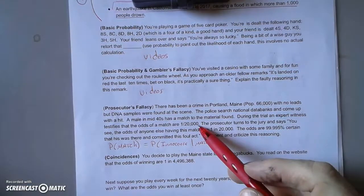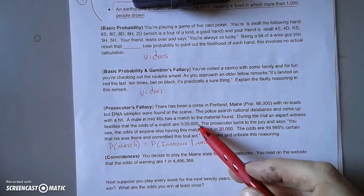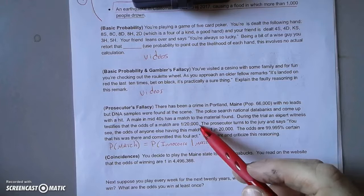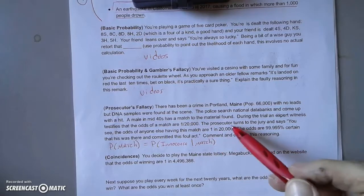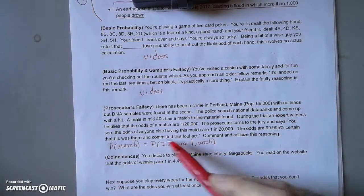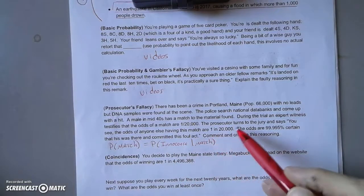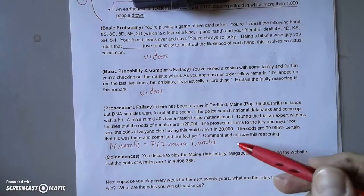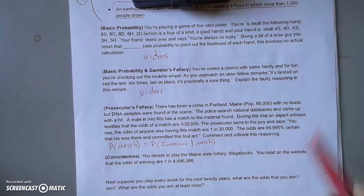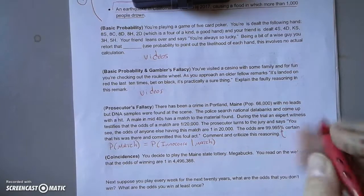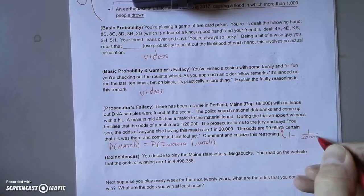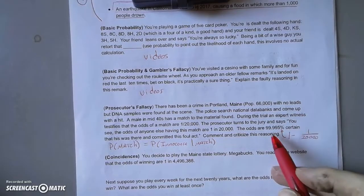So the odds of a match are one in 20,000. This is what the expert witness testifies about the DNA found. The prosecutor then turns to the jury and says, essentially, the odds of anyone else having this match are one in twenty thousand. This is not true. And then he takes that odds of innocence and turns it into the odds of guilt. This number right here is 1 minus 1 over 20,000, so this is not correct.